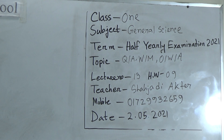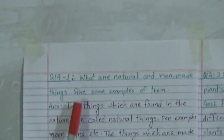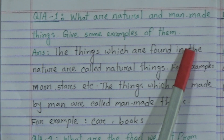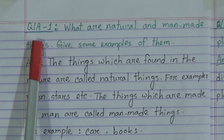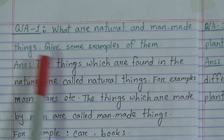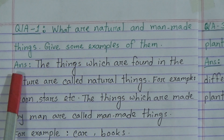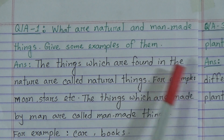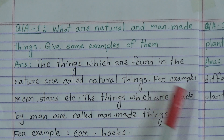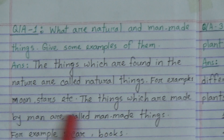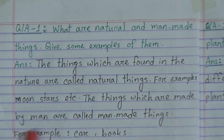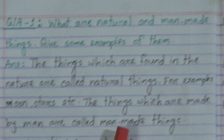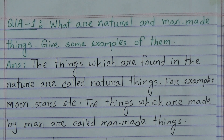Question answer number one: What are natural and manmade things? Give some examples of them. Answer: The things which are found in nature are called natural things — for example, moon, stars, etc. The things which are made by men are called manmade things — for example, car, books.